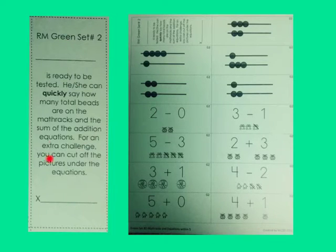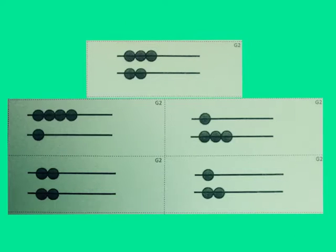For Green Set 2, you must say what number is represented by the math racks and the answers for these addition and subtraction problems. What is the total number in these math racks?